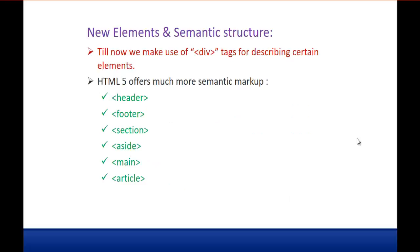Coming to the next feature: new elements and semantic structure. Till now, we made use of div tags for describing certain elements, but HTML5 offers much more semantic markup. Semantic tags give a complete meaning. For example, header, footer, section, aside, main, and article — these are the new elements which have been added in HTML5.